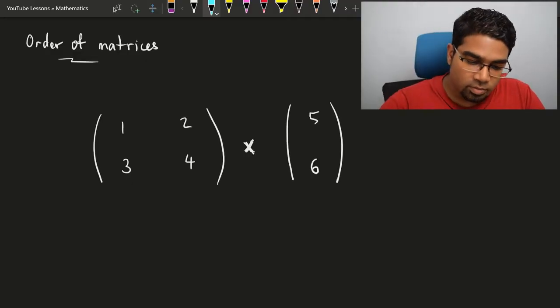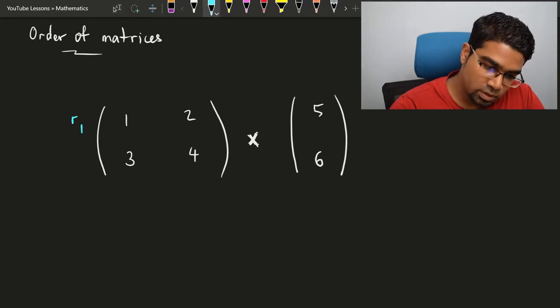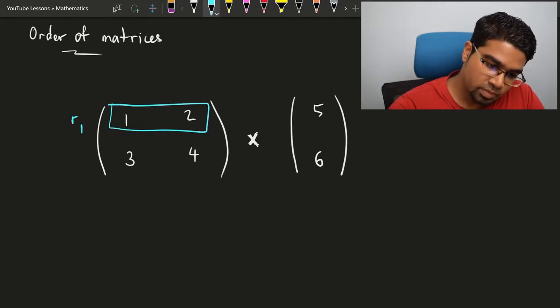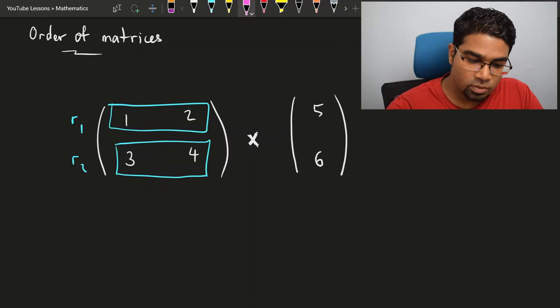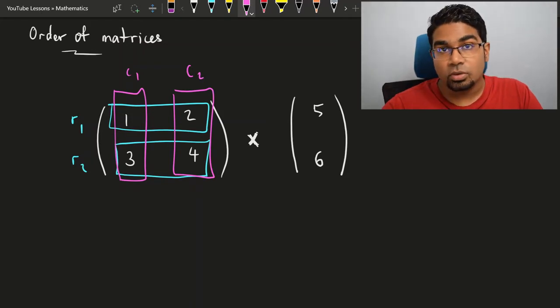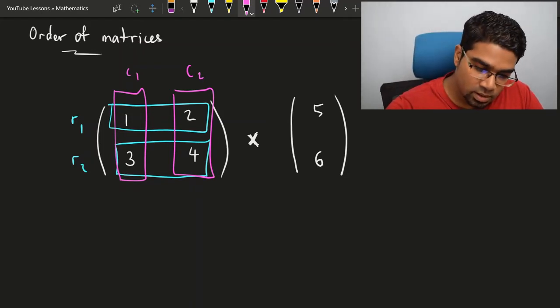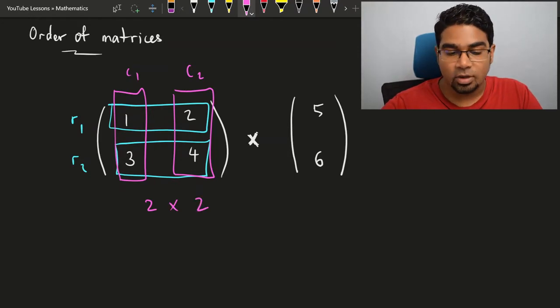The order of a matrix is the row by column. So let's look at the number of rows in this matrix. We have the first row and then row 2, so we have two rows. And we also have the first column and the second column. So we have two rows and two columns, which makes this a 2 by 2 matrix — row first, then column.